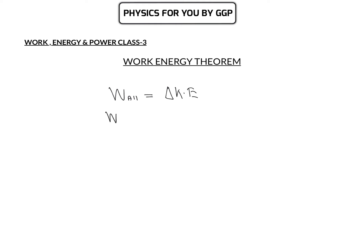Work done by all forces can be written as work done by conservative force plus work done by non-conservative force, and this equals change in kinetic energy. When using the Work-Energy Theorem, either use W_all = ΔKE, or separately consider W_conservative + W_non-conservative = ΔKE.